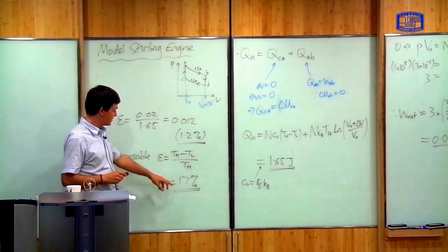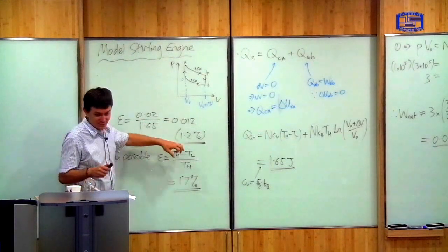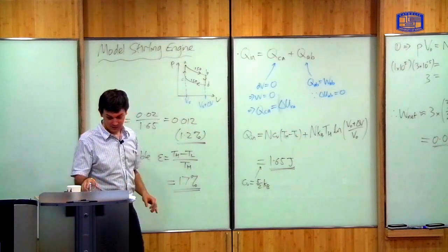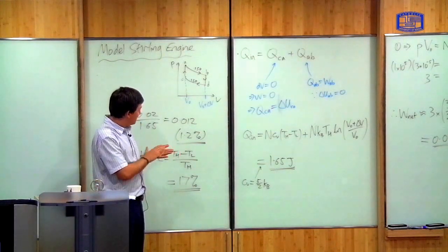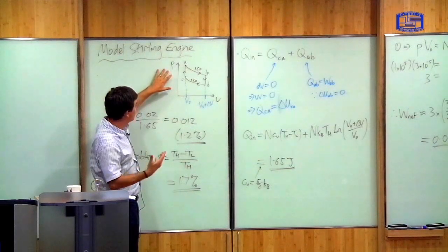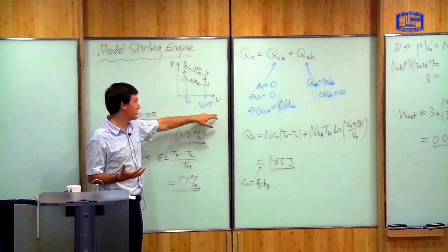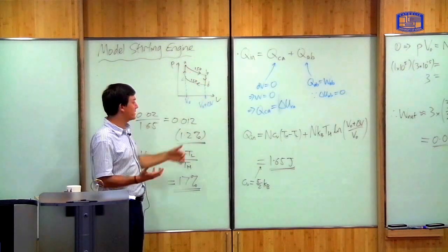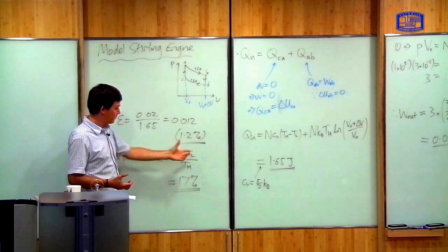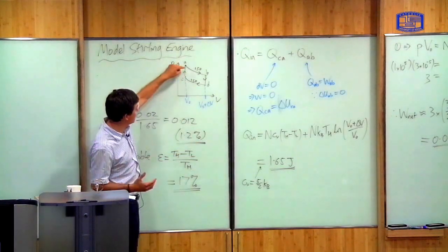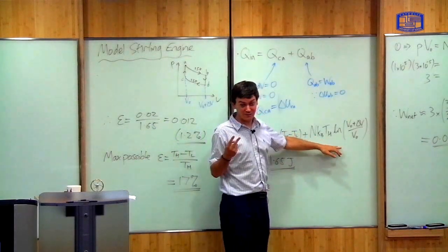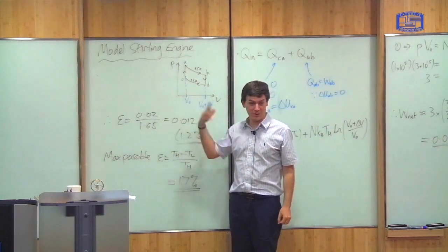The maximum possible efficiency between a cup of coffee and room temperature, using the Carnot result (T_H − T_L)/T_H = (353 − 293)/353, is about 17%. By calculating with an ideal gas we get an efficiency of about 1.2%, well below the Carnot maximum. This illustrates why the ideal gas matters: by combining the shape of the heat cycle on a PV diagram with the ideal gas equations, we can calculate the work done, heat absorbed, and efficiency of the cycle.